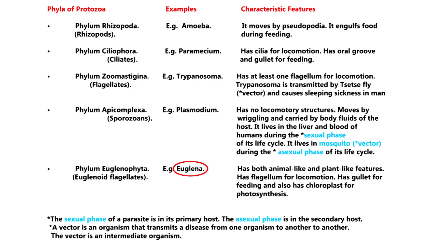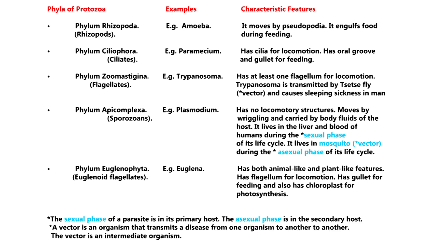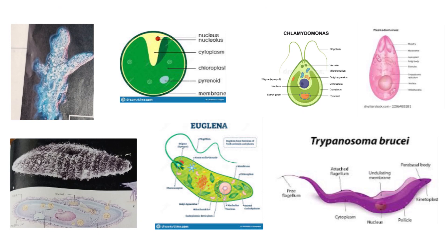A vector is an organism that transmits a disease from one organism to another — the tsetse fly and mosquito are vectors. Regarding Plasmodium: its sexual phase is in the primary host, which is the human being, and its asexual reproduction occurs in the secondary host, which is the mosquito.